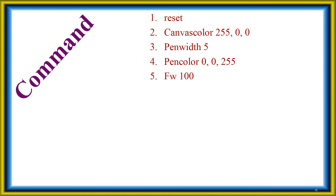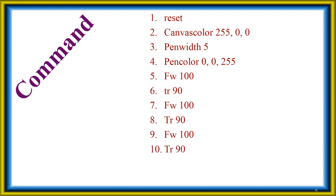See the fifth command: forward 100 — move 100 steps. Sixth command: turn right 90. Then forward 100 again, turn right 90 again, forward 100, turn right 90, forward 100, turn right 90. For a rectangle with four sides we use forward and turn right repeated four times.